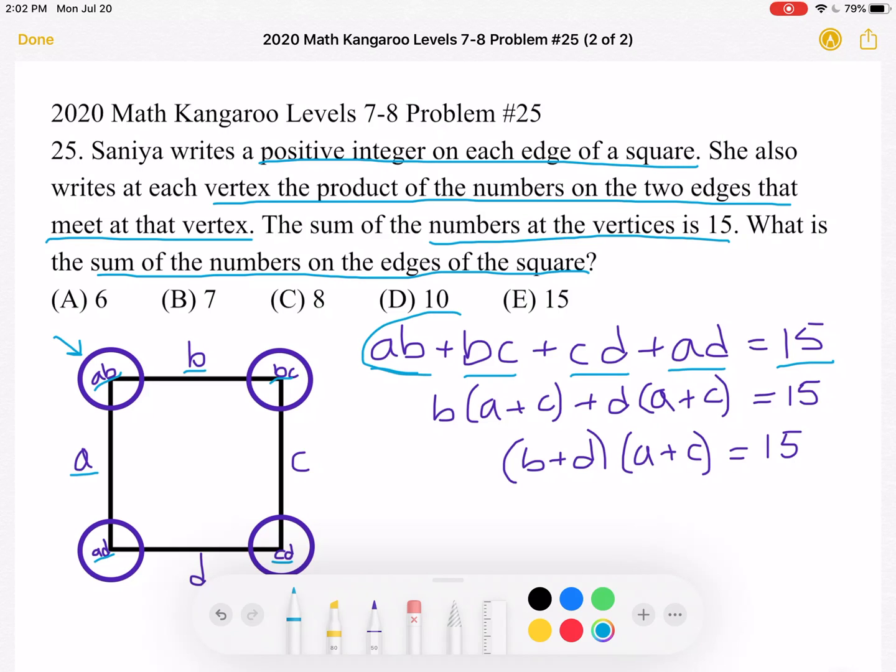So in this pair of terms, we can factor out a B to get B times the quantity of A plus C. And over here, we can factor out a D to get D times the quantity of A plus C is equal to 15.